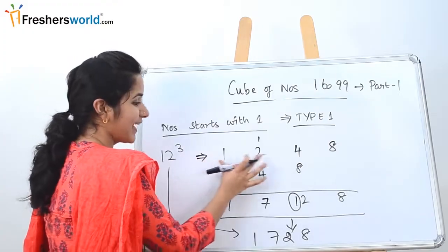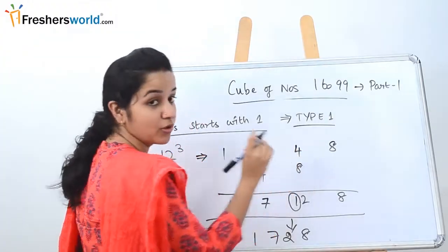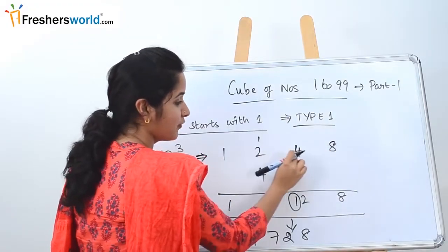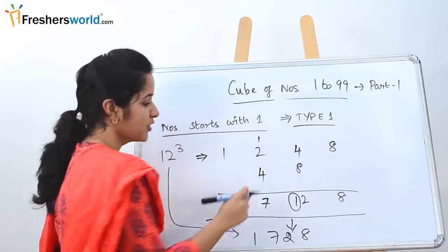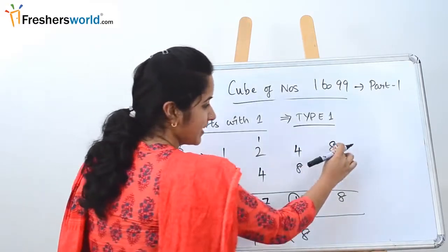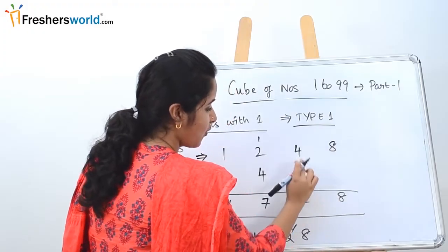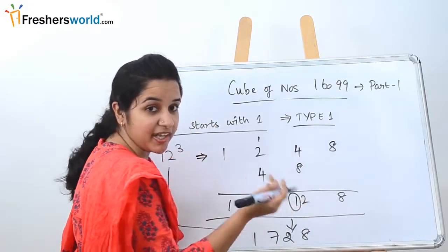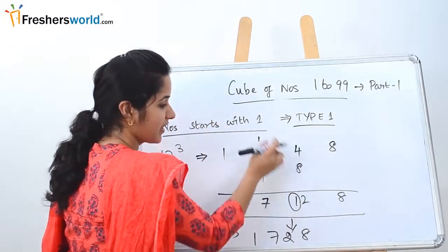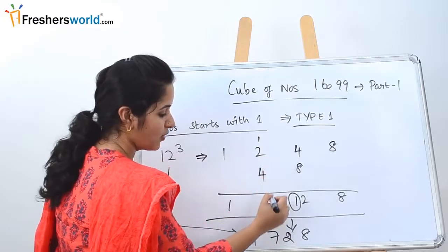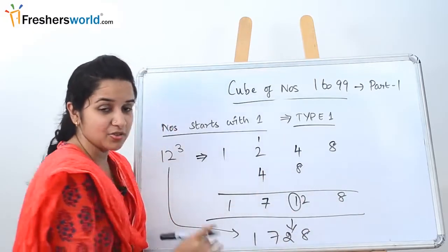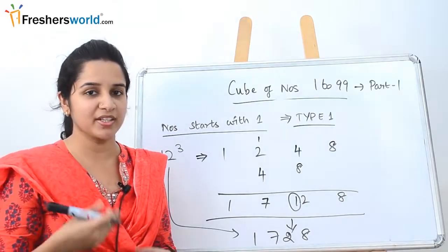To recap: write the first two digits as such. The square of the second digit is 4, and the cube is 8. In the middle two digits, you multiply 2 and 4 each by 2 to get 4 and 8. Add from right to left — 8 stays, 8 + 4 = 12, write last digit and carry over, 1 + 2 = 3, 3 + 4 = 7. Answer: 1, 7, 2, 8.